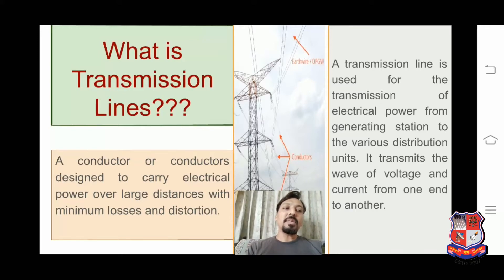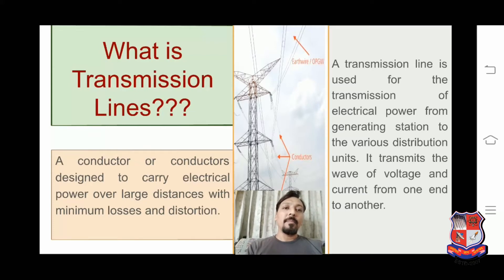Transmission line basically transmits the wave of voltage and current from one end to the other end. The transmission line has two ends. The first end connected with the generating station is known as the sending end, and the other end where it is connected with the distribution unit is known as the receiving end.